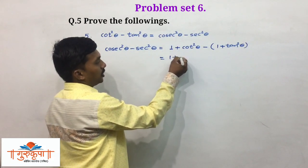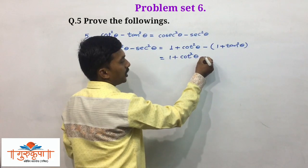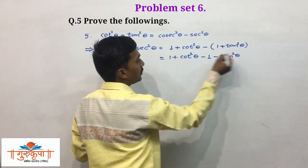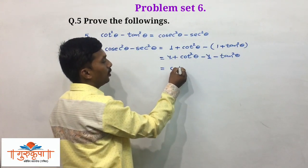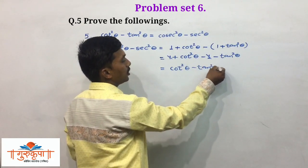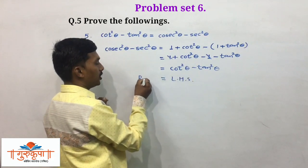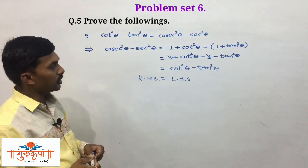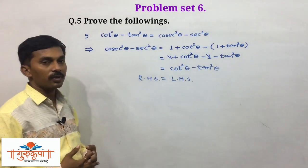Expanding: 1 plus cot squared theta, then minus into plus is minus 1, and minus into plus is minus tan squared theta. The plus 1 and minus 1 cancel, and we have cot squared theta minus tan squared theta, which is LHS. We wrote RHS and got LHS. It is very easy — in just three steps we get the result. This is all about example number 5.